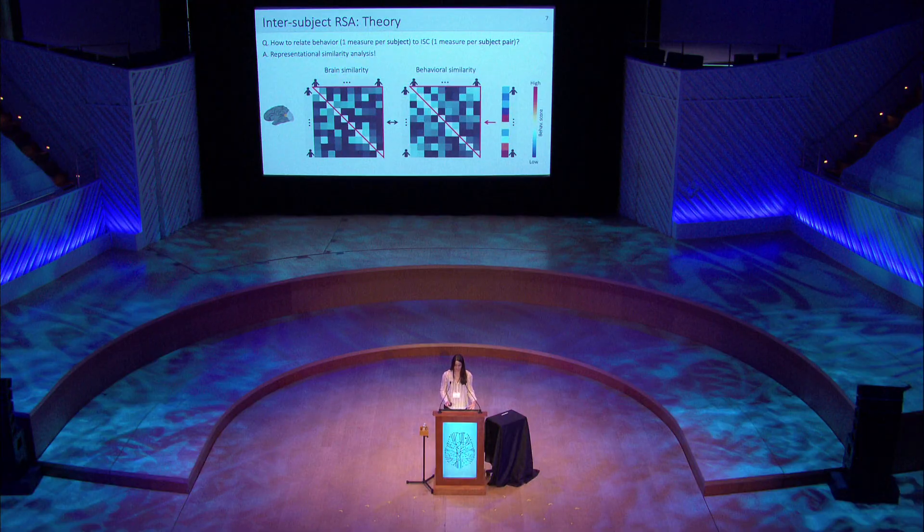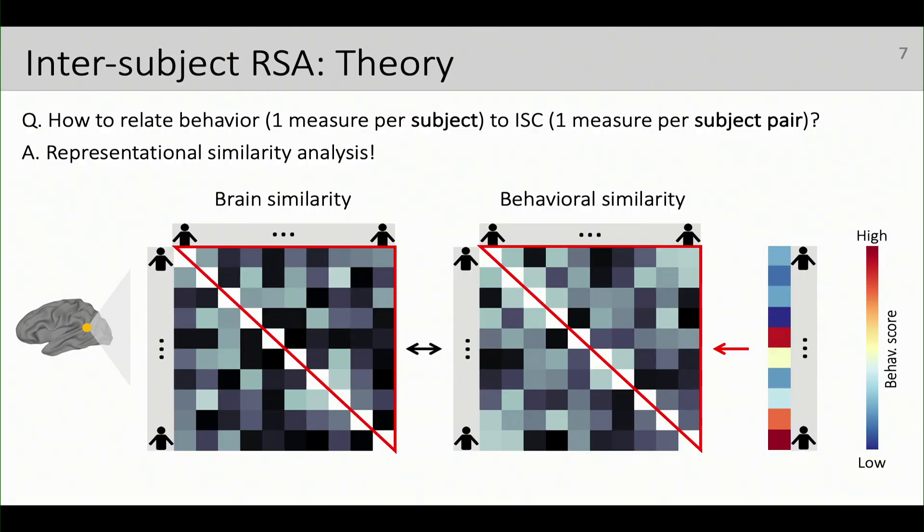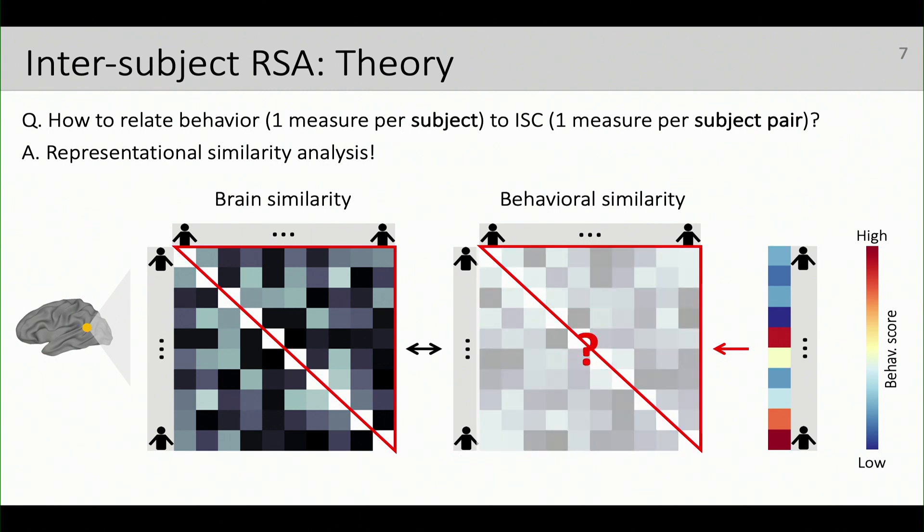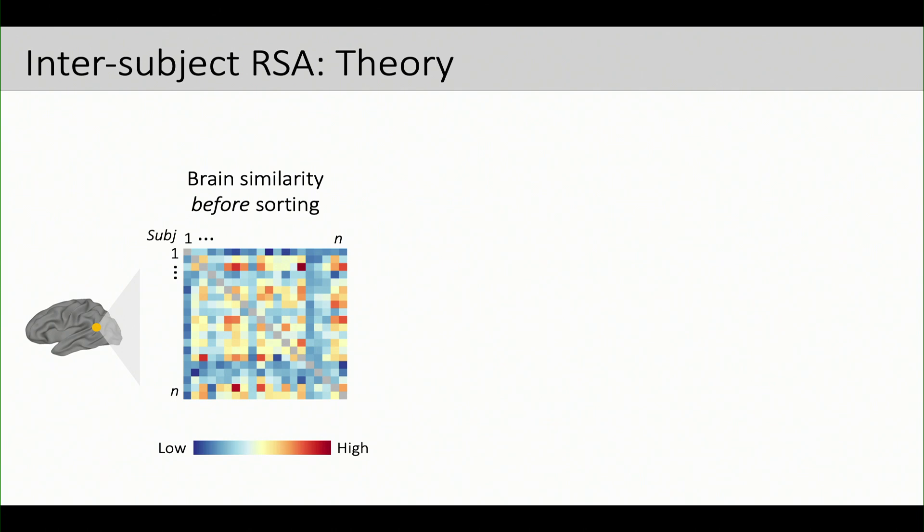But depending on the phenotype we're interested in, we may sort of only have one behavioral score per person. So how do we construct this similarity or this distance matrix, so to speak? And it turns out the way that we do that, we're baking in certain assumptions into our data. And I'll illustrate what I mean by that.